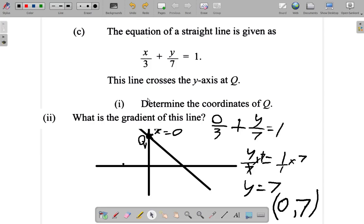Let's look at part 2 of C. Earlier, we saw that the line crosses the y-axis at 0.7.